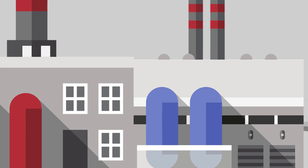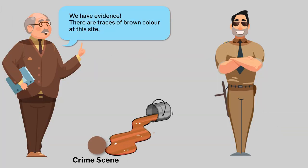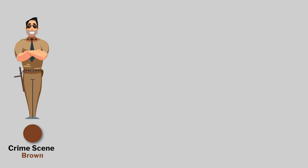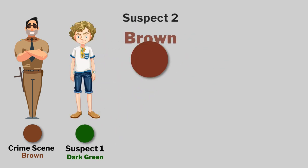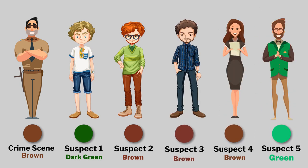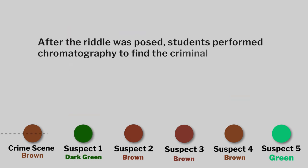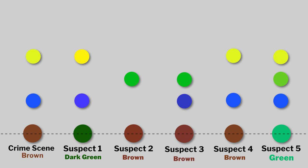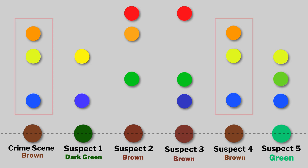A crime was committed in a paint factory. The police investigating the case discovered some brown paint at the crime scene. There are 5 suspects and each suspect was working with a particular colour. The samples of the paint found at the crime scene as well as those of the suspects are available to you — can you help the detectives figure out who the criminal is? After this riddle was posed, the students were intrigued and participated enthusiastically. As they did not know the composition of each colour, they performed chromatography and identified the criminal. The students tested each colour and found the criminal, thoroughly enjoying the forensic activity.